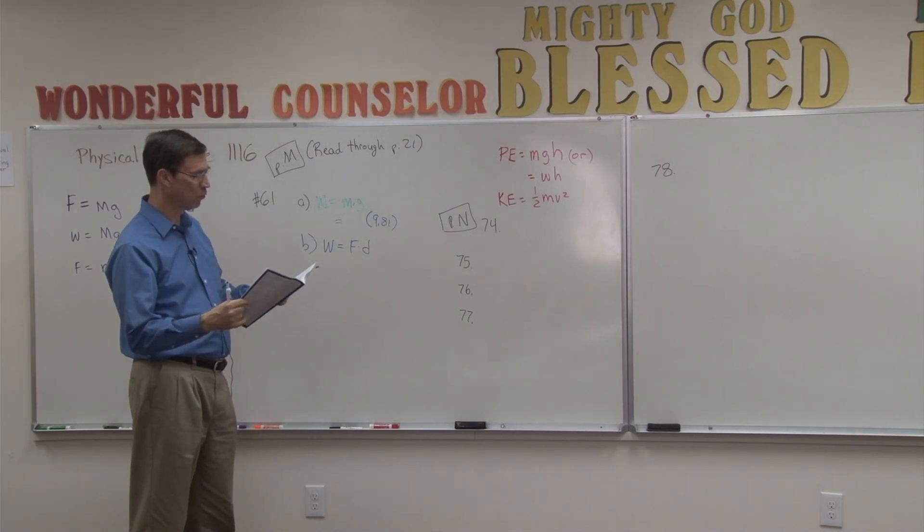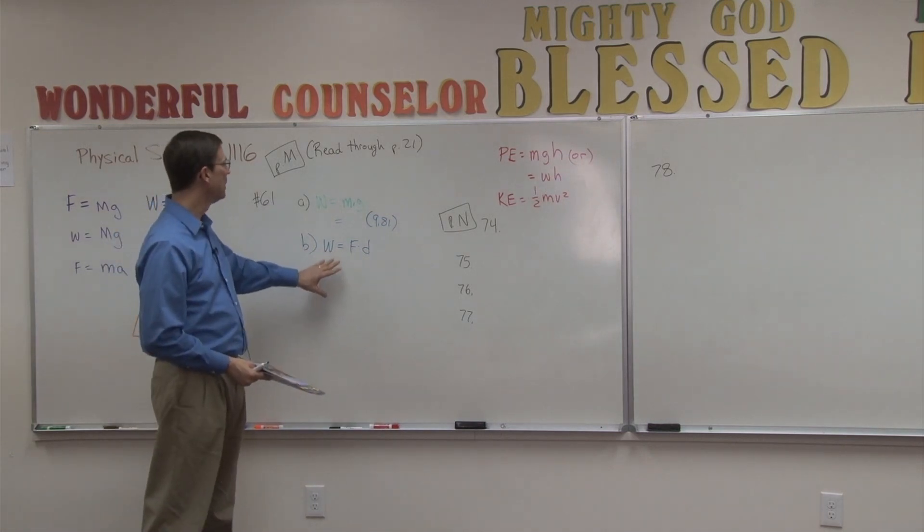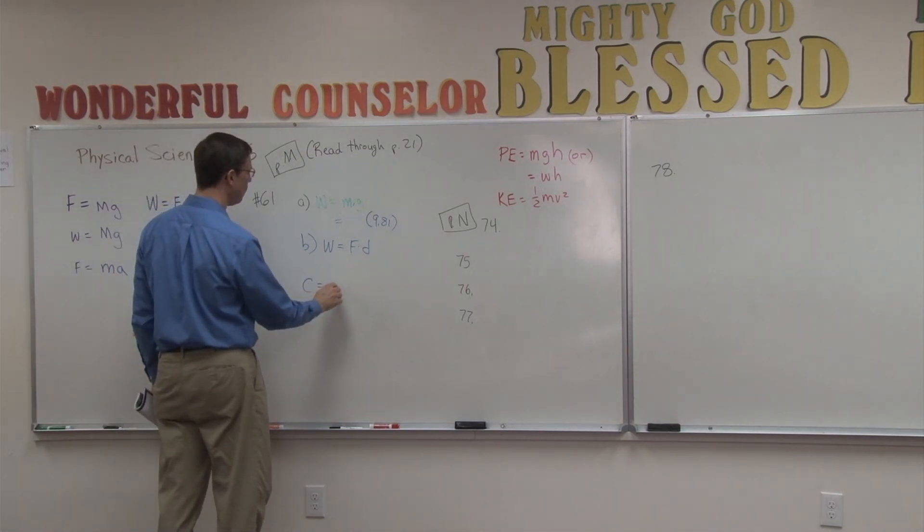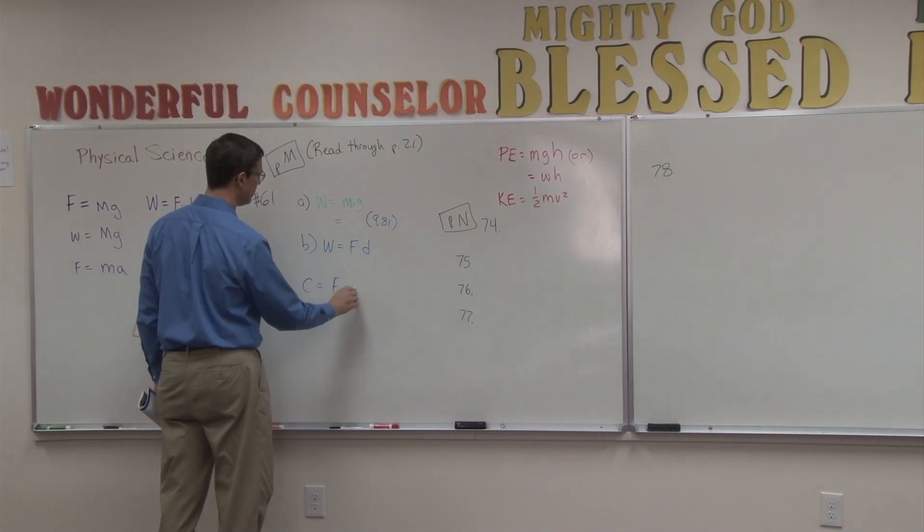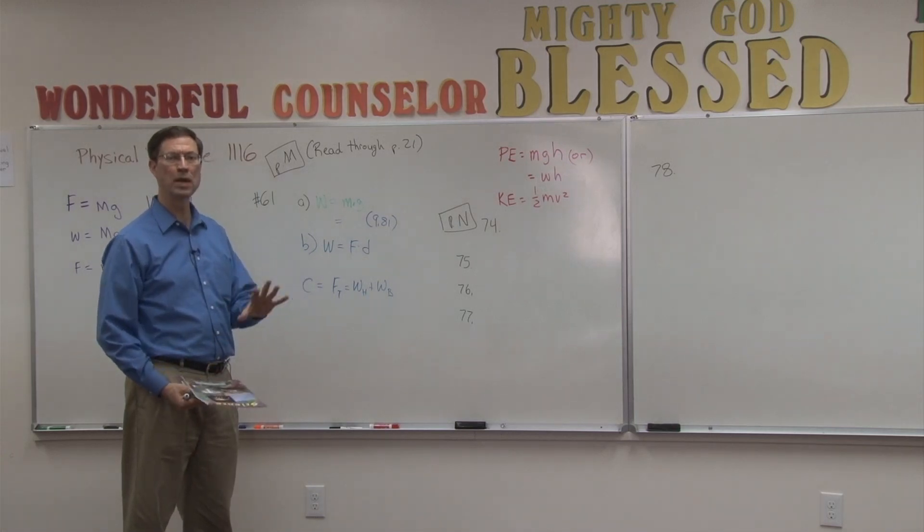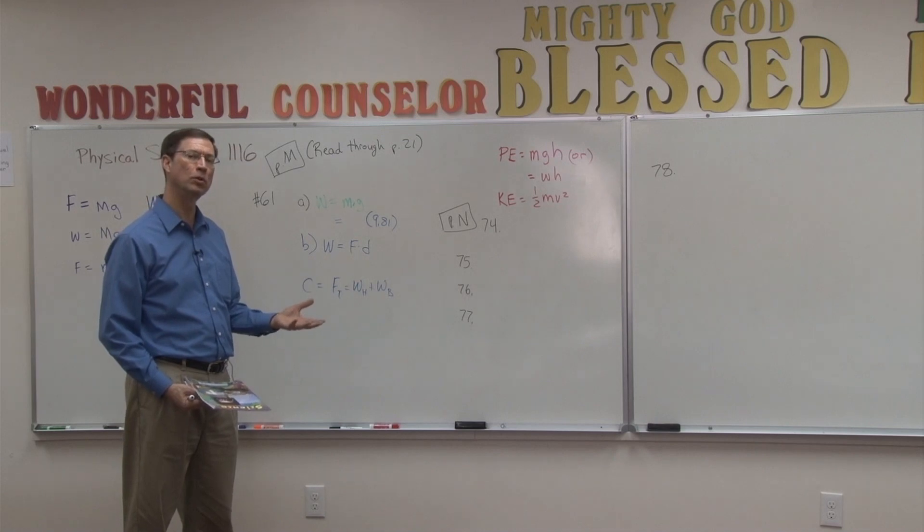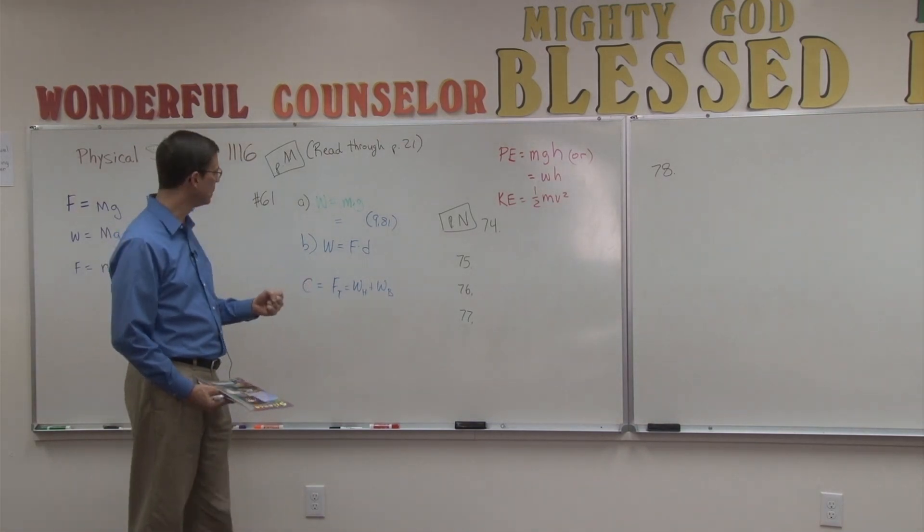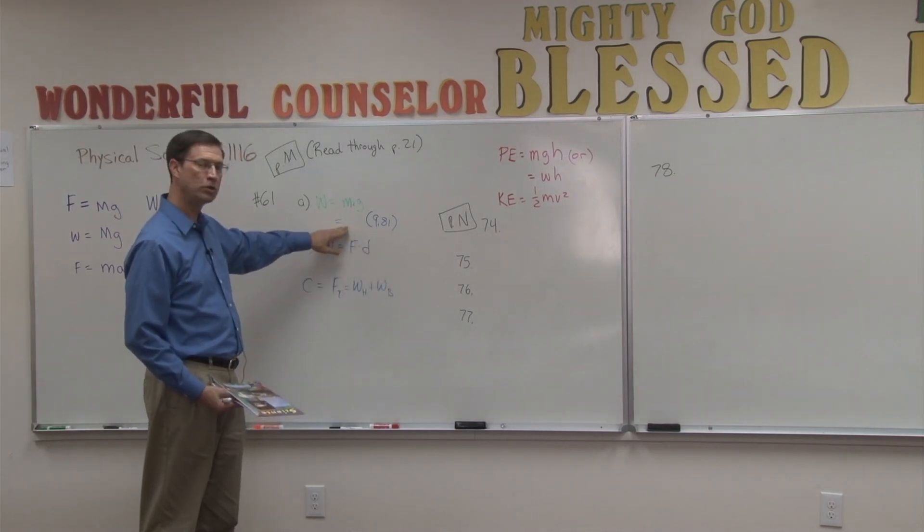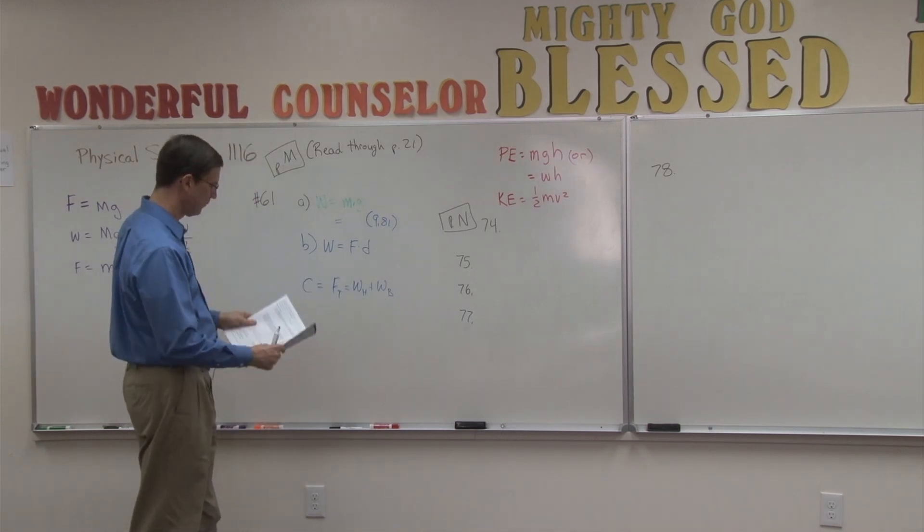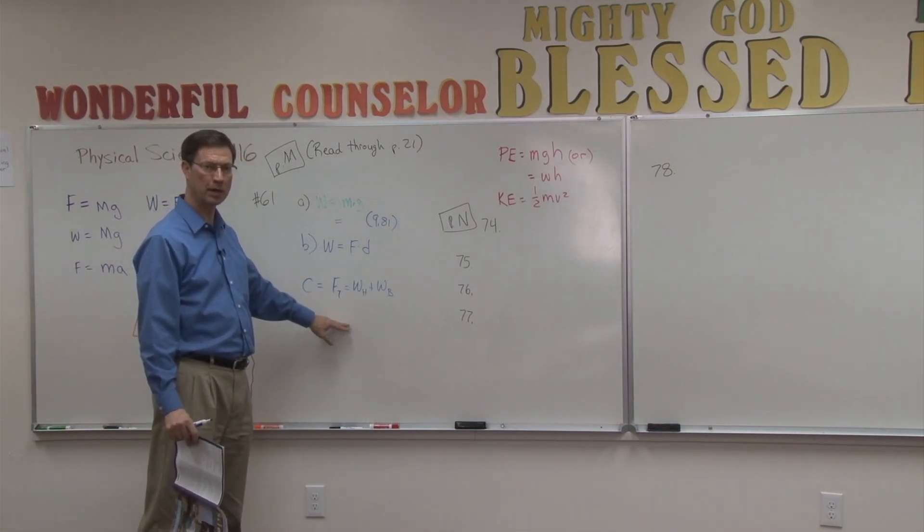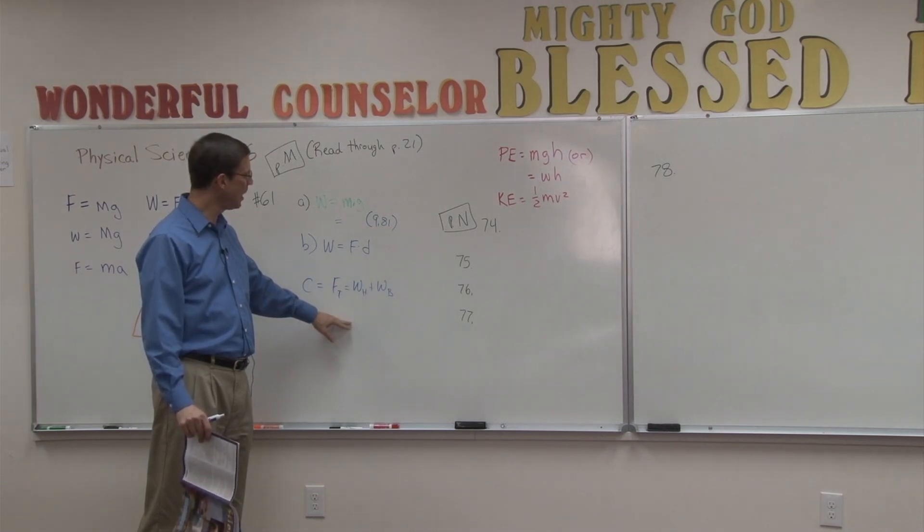Then it says how much total work was accomplished. Now for total work, that means we're going to take the backpack plus the hiker. So for C, we first need to find out what is the total force. Total force equals the weight of the hiker plus the weight of the backpack. I'm using force and weight interchangeably because weight is a force, so don't let that confuse you. It's the same thing. They're both measured in newtons. So the weight of the hiker is 610. The weight of the backpack was the answer that you got from A. So you'll add those two together. And then the last step is to multiply that times the 150. And that will be the total work accomplished.